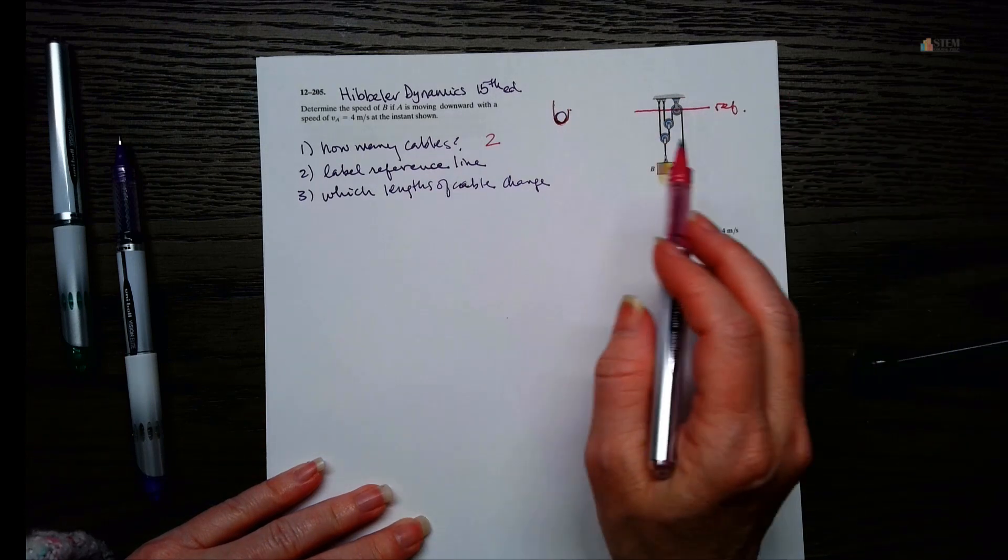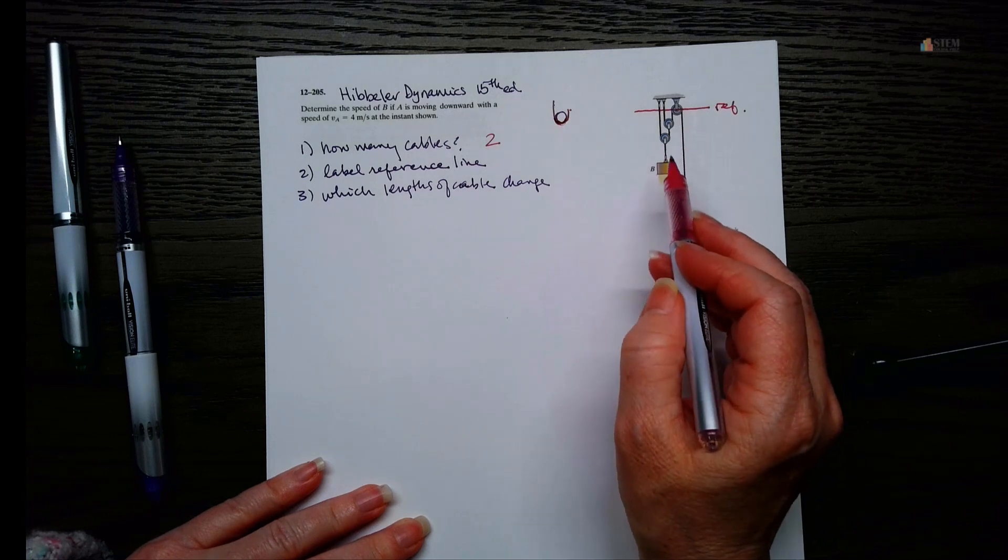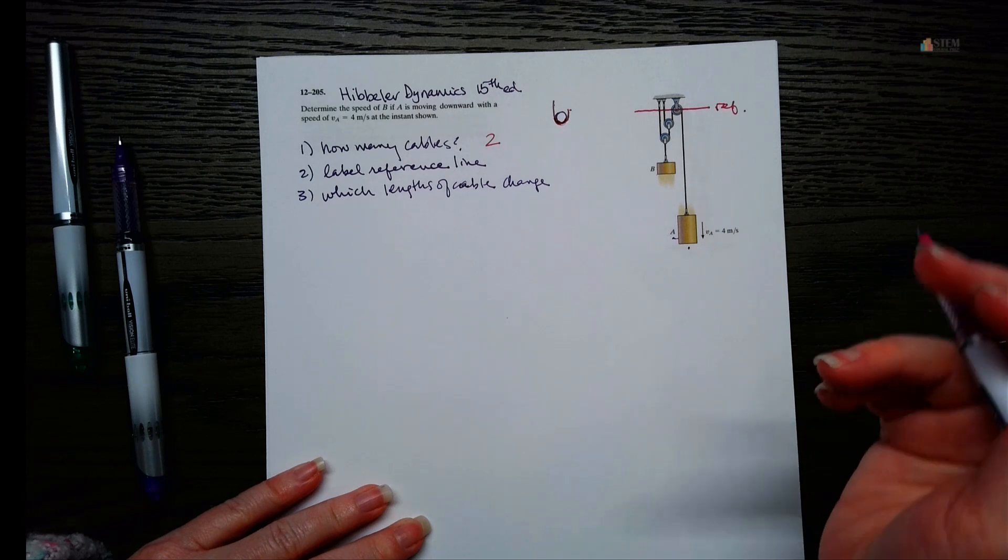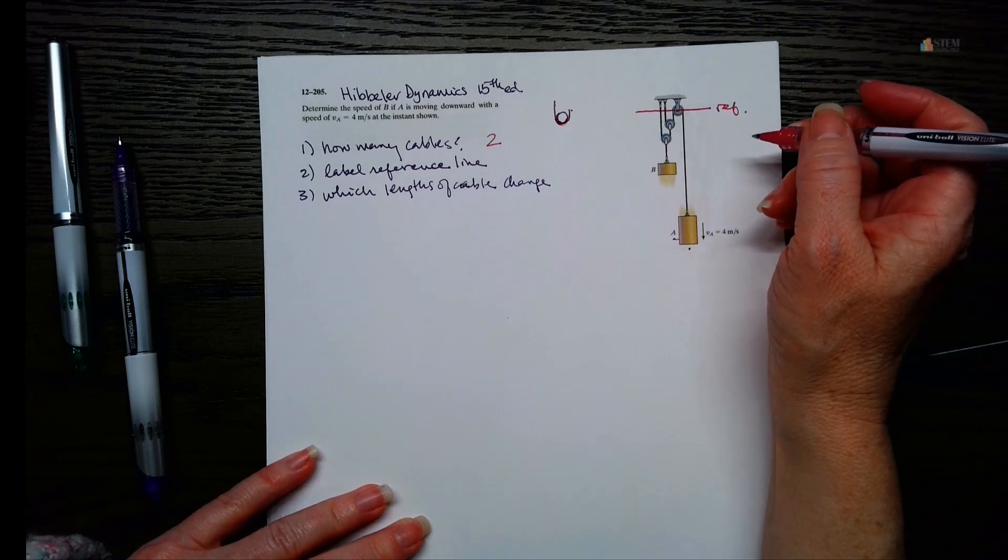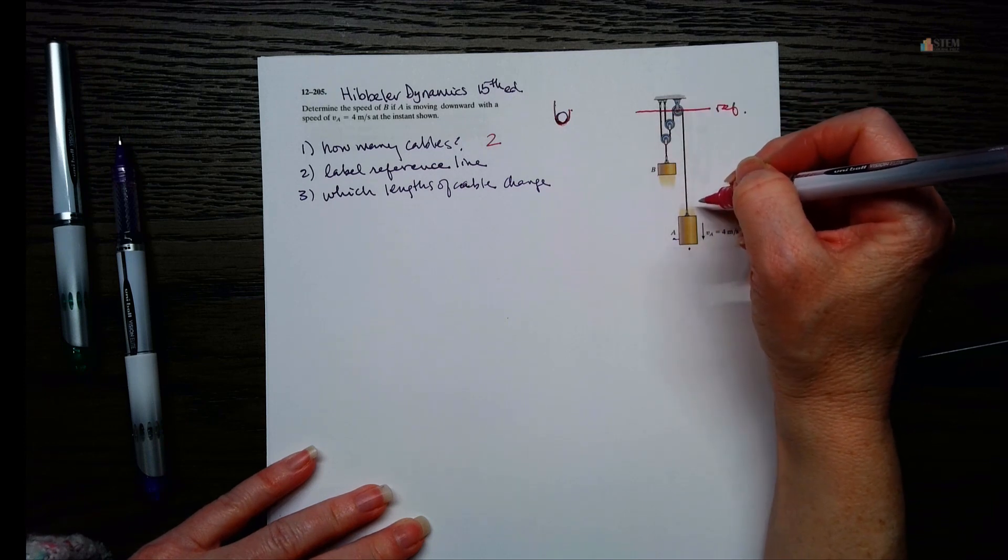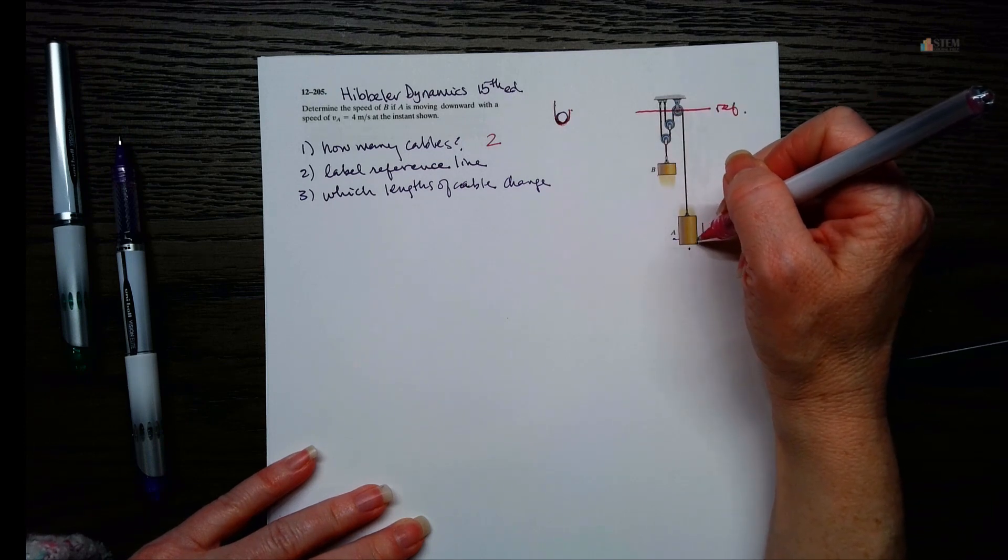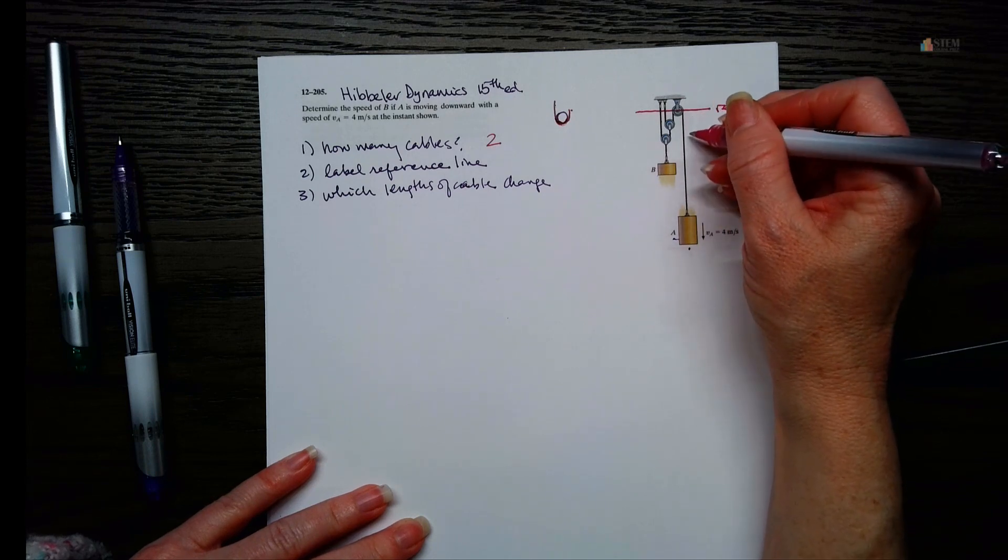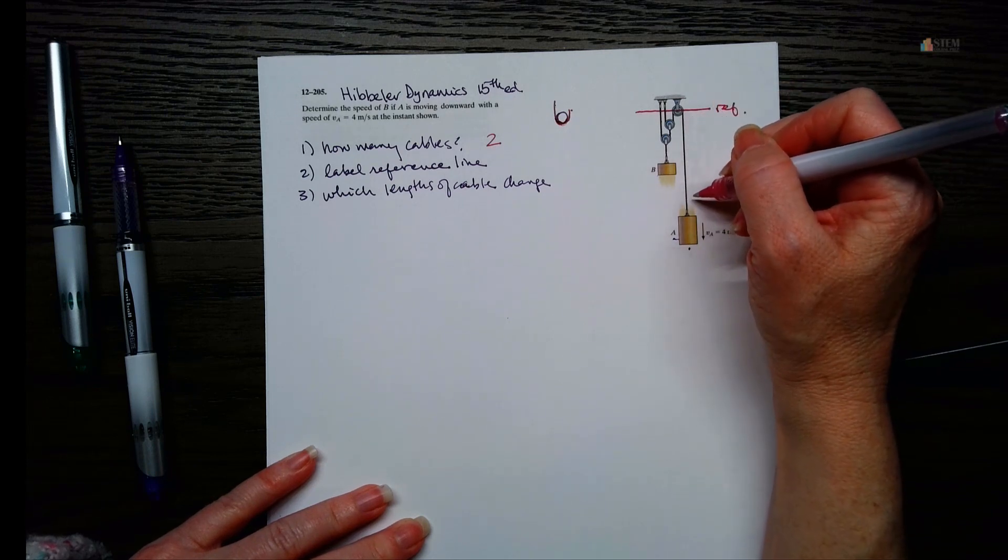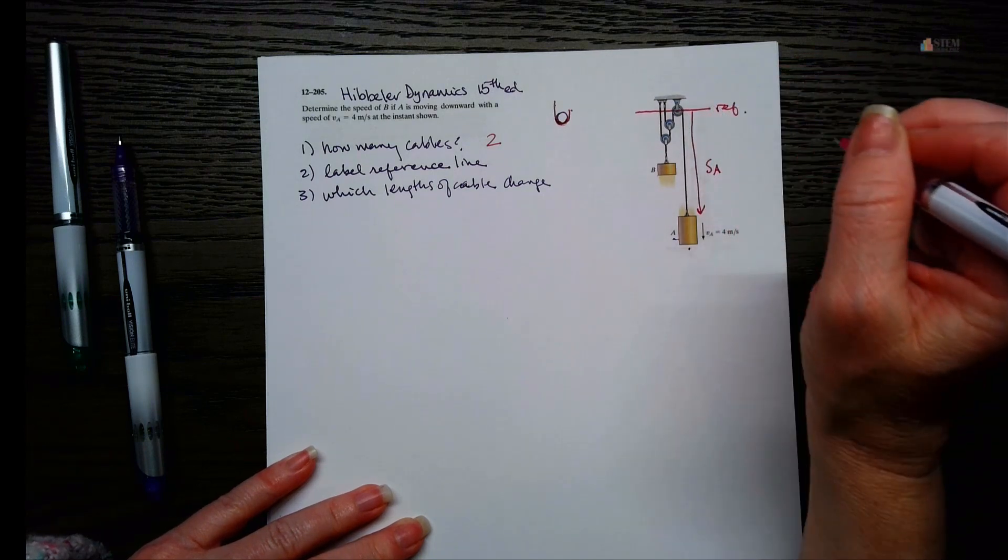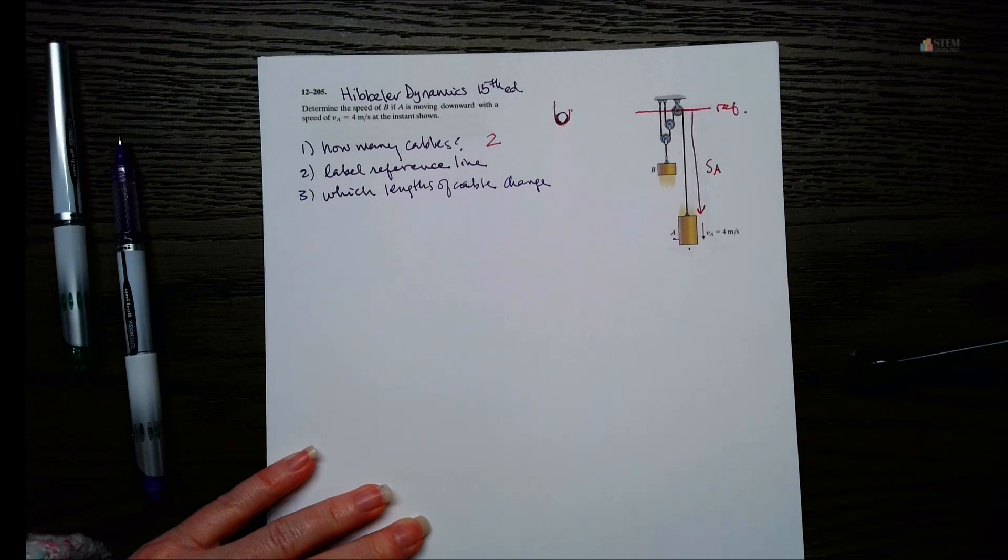And third thing, we need to figure out which lengths of the cables are going to change, and then we're going to give those a variable name. So let's go ahead and we can start with this longer cable, I guess. Now if A is moving down, can this length here change? It can, right? So let's give that a name, let's call it SA. Okay, so that can change.